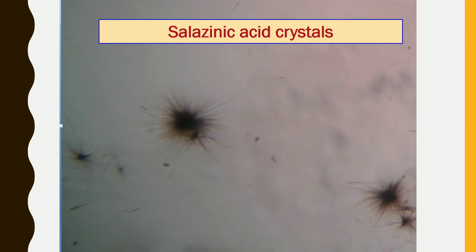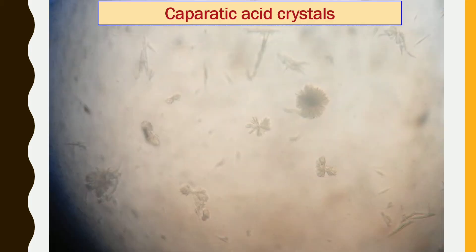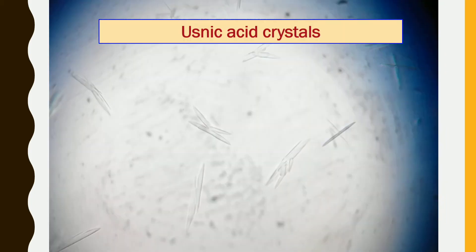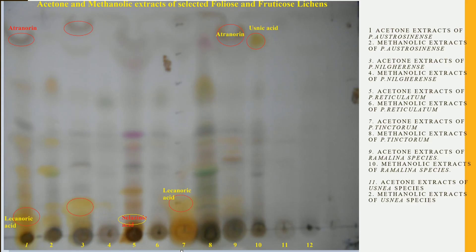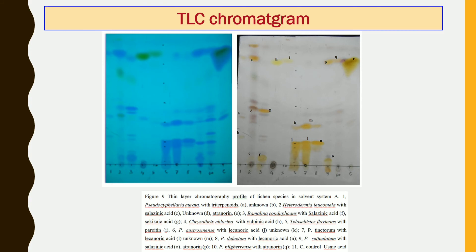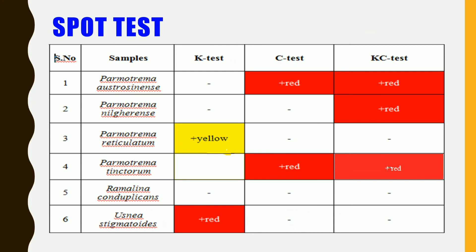Different shapes of crystals have been observed. A Graphis species shows some unidentified lichen compounds. These are acetone and methanolic extracts of foliose and fruticose lichens. Most lacunoric acids were identified from the acetone extracts, analyzed using thin layer chromatography.